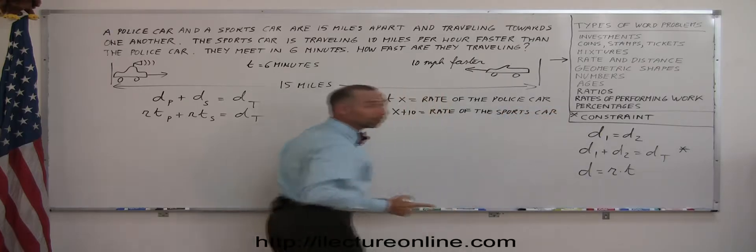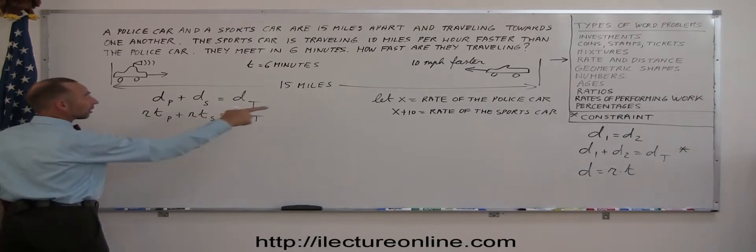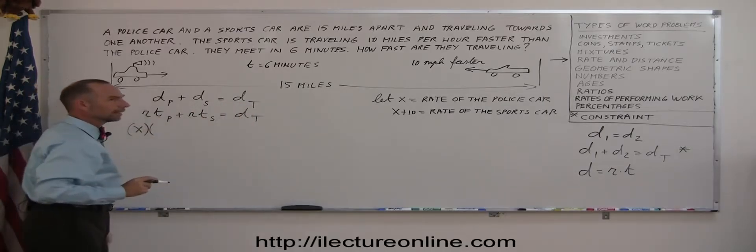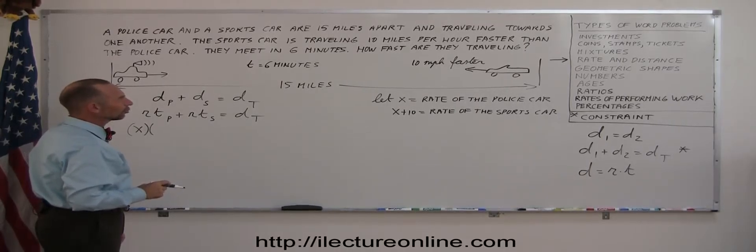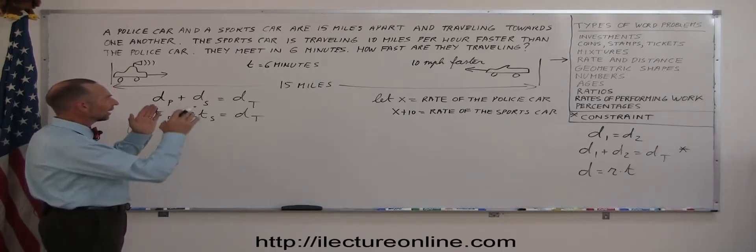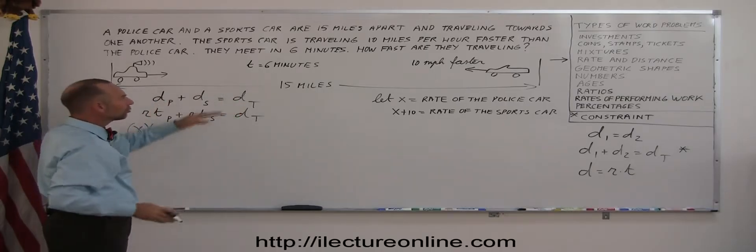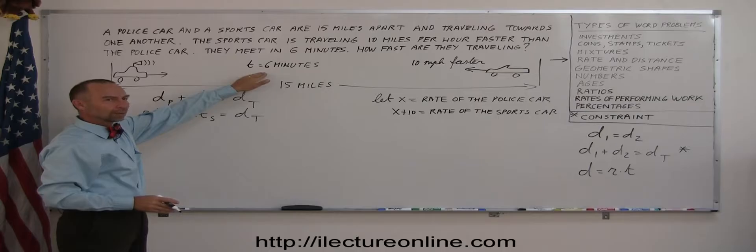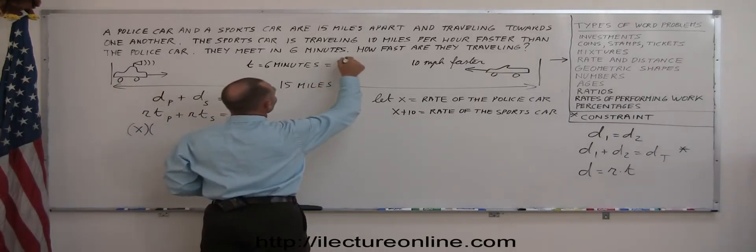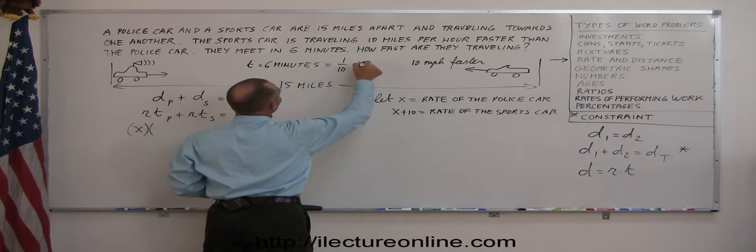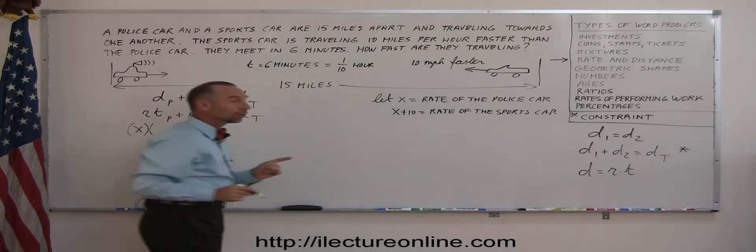Now we're ready to plug all that into our equation. So the rate of the police car is x. The time of the police car is, should we put six minutes down or should we convert that to hours? Since the rate we use and the distance we use is miles, we should convert the time to hours. In six minutes, there's 60 minutes in an hour. That is the same as one-tenth of an hour. So let's use the proper units here.